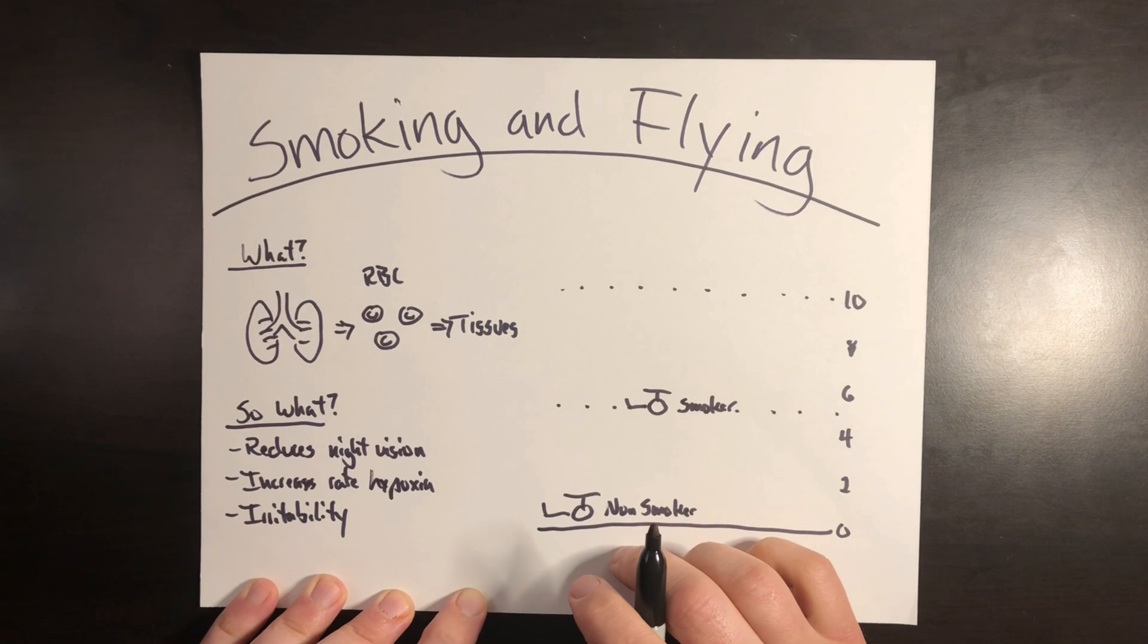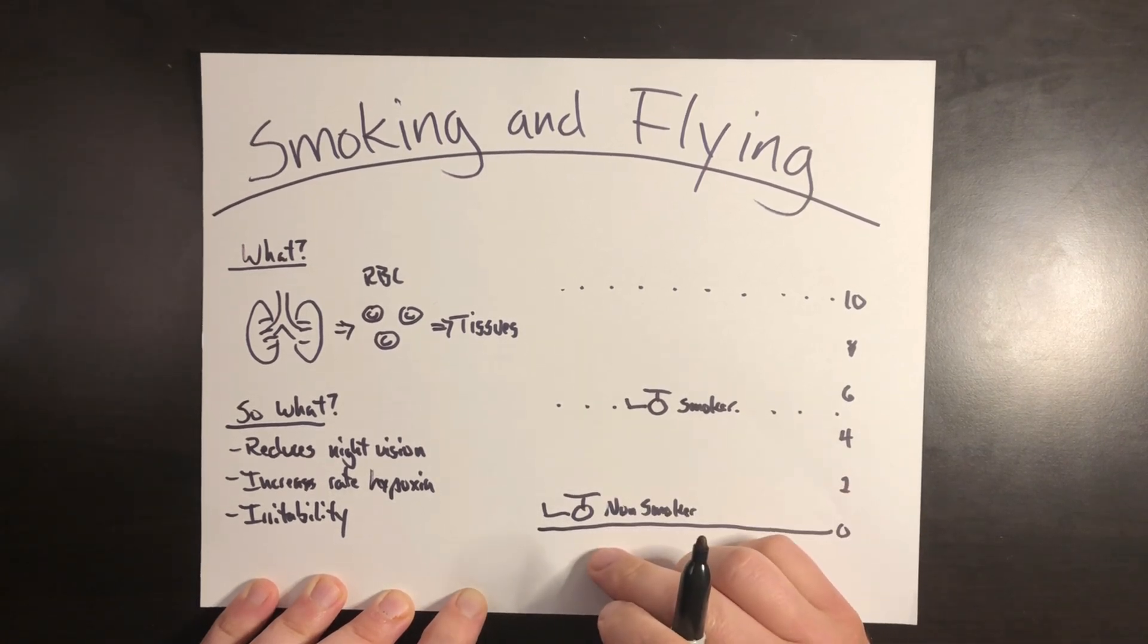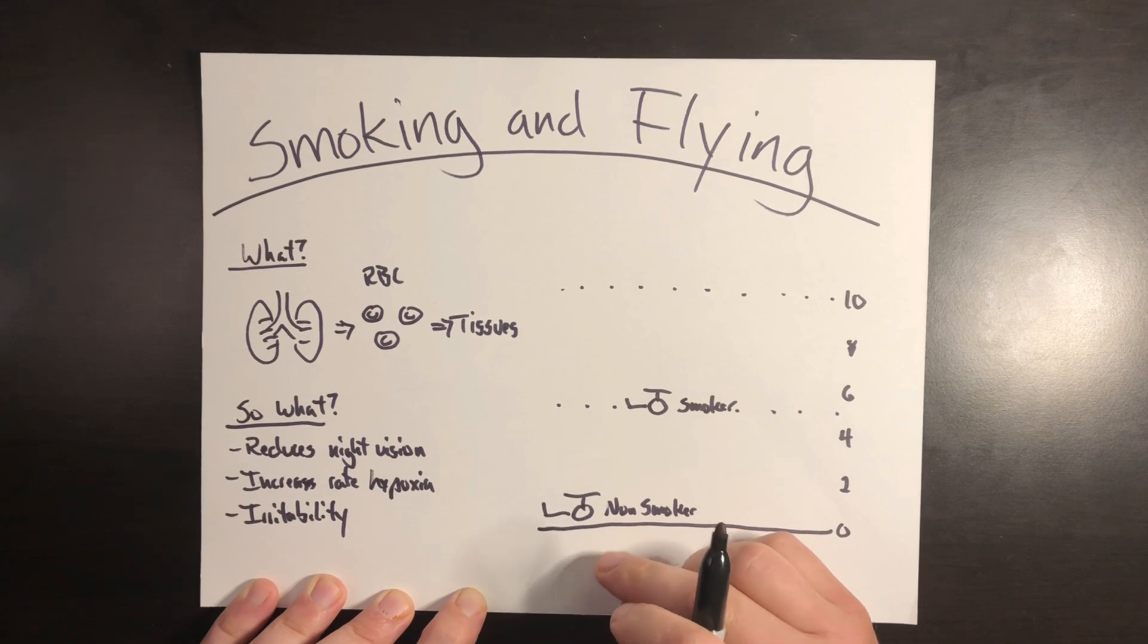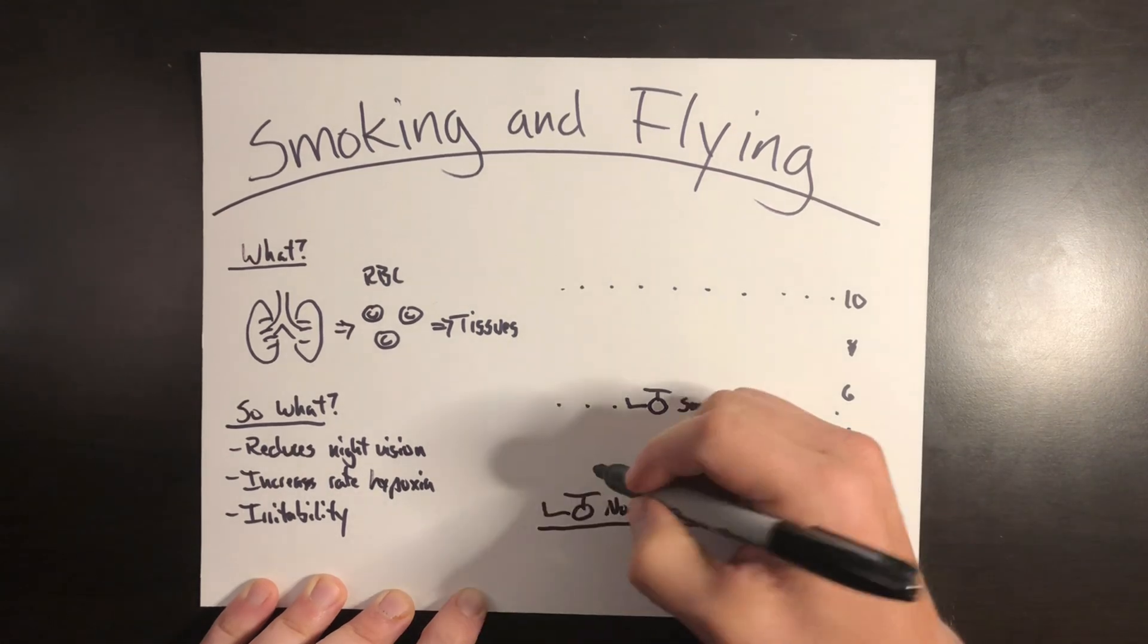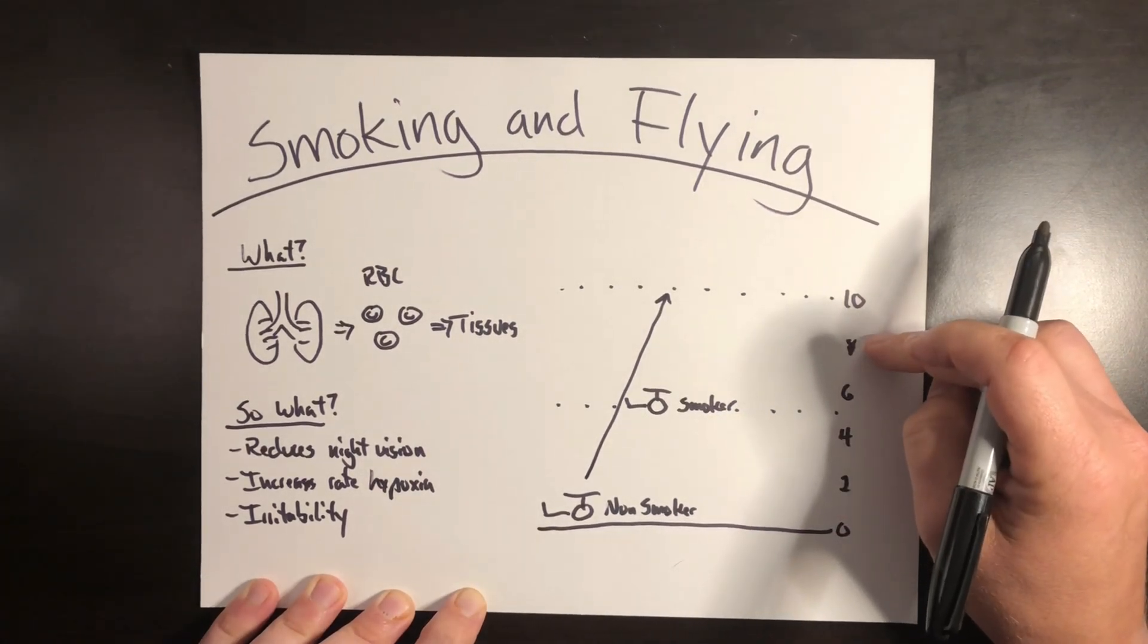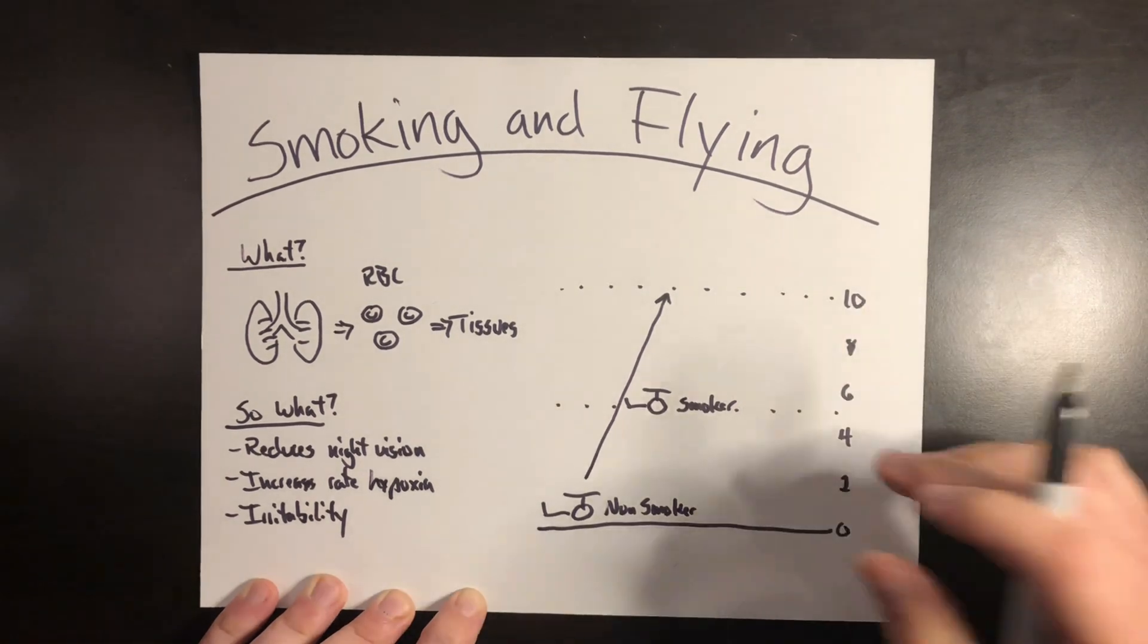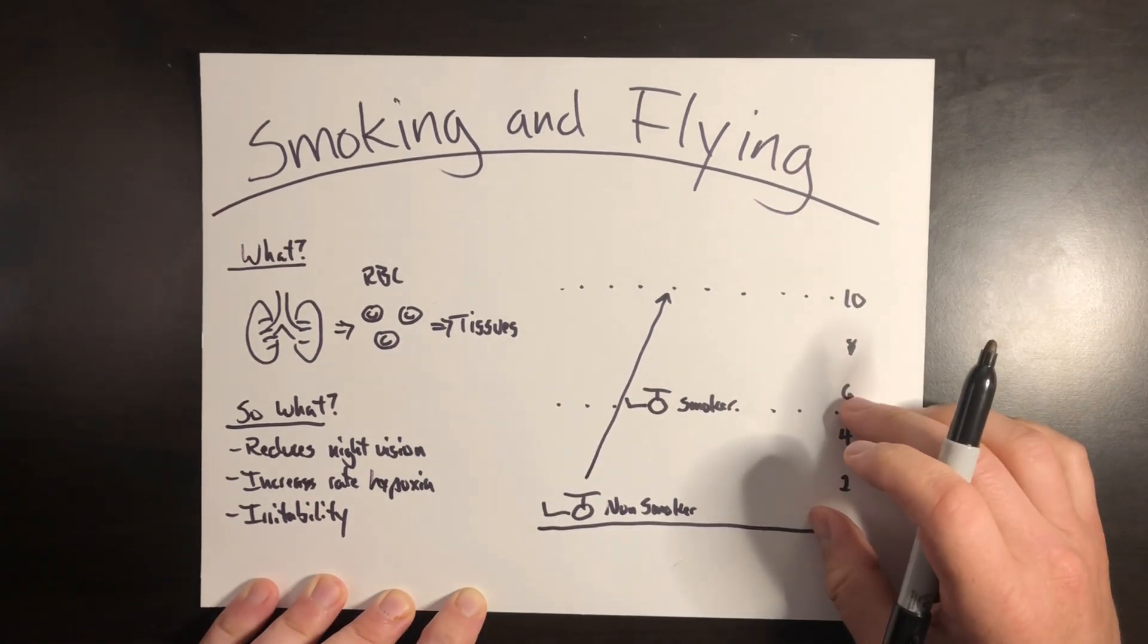So here's where it gets interesting. At roughly 5,000 feet of pressure altitude, a non-smoking aviator begins to have a slight reduction in night vision. At 10,000 feet, that non-smoking aviator can have up to a 20% reduction in night vision if there's no supplemental oxygen. This is just, there's not enough oxygen in the air, and the body starts making decisions on what it's going to keep.